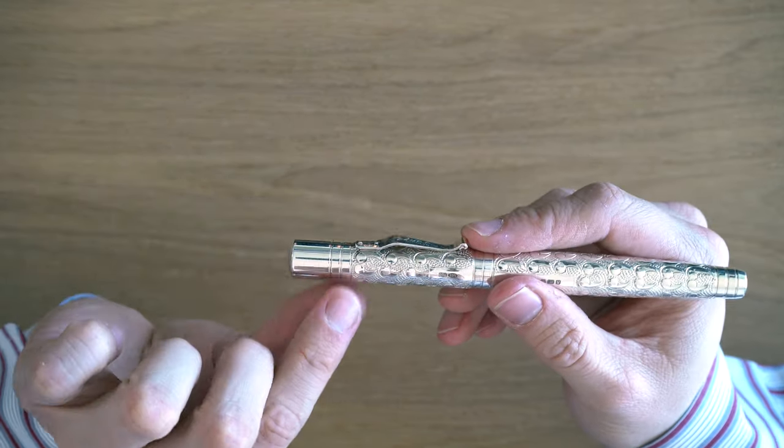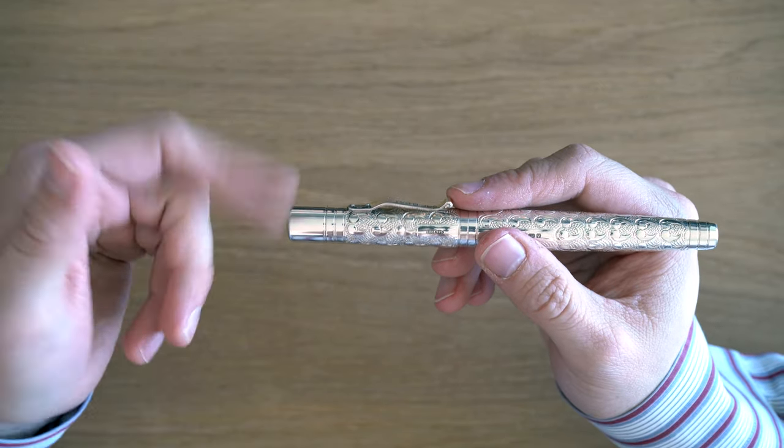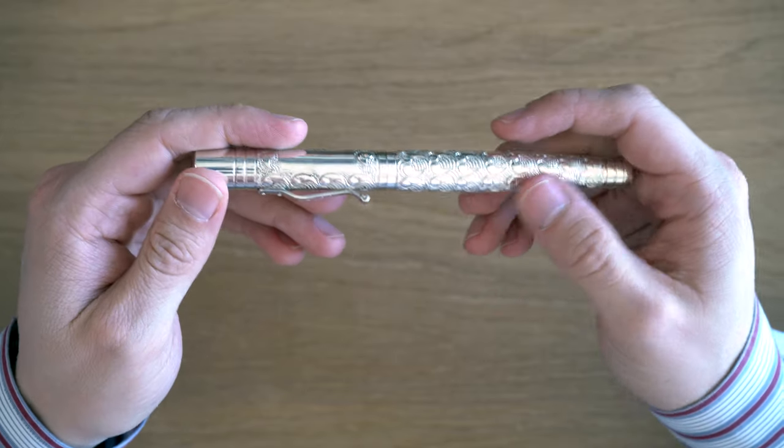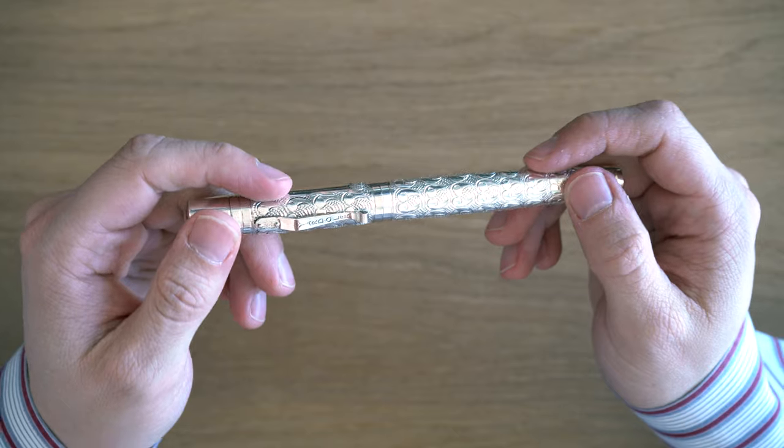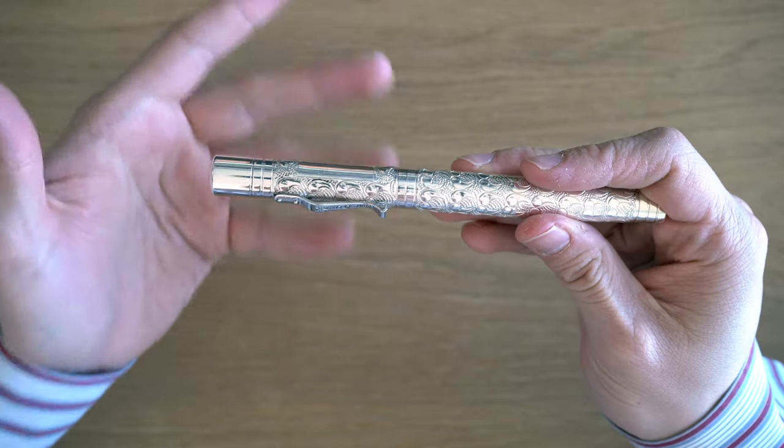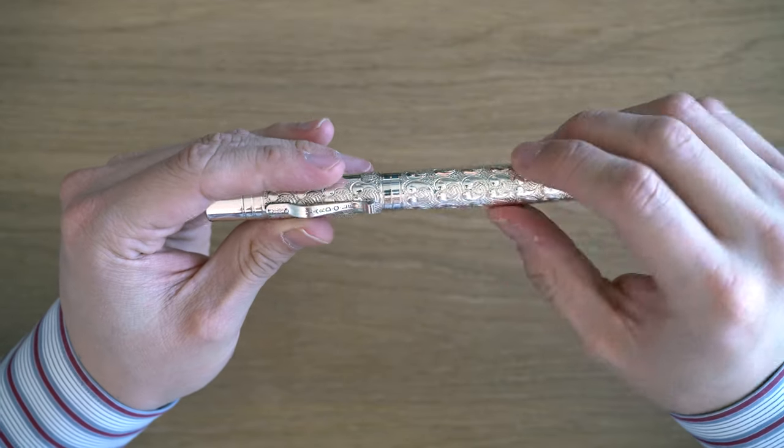They basically have a tool that makes these marks in the pen, and they whack it with a hammer. I can't remember the exact figure. It was either 3,000 or 1,300 strikes that an individual artisan is doing to make these engravings.